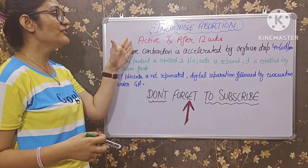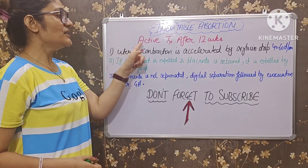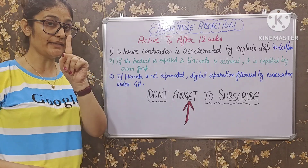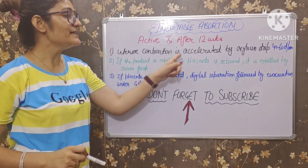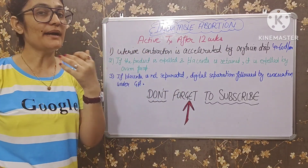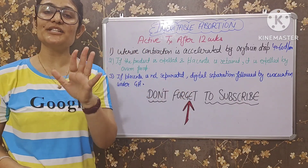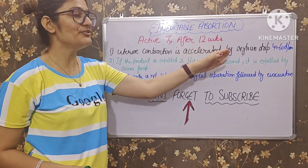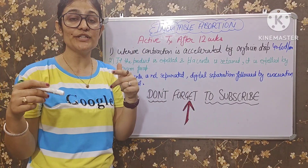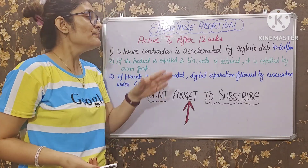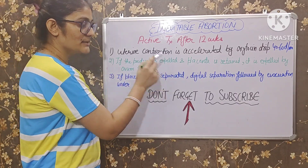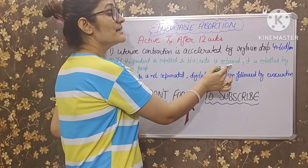Agar pregnancy 12 weeks se baad ki hai, gestation 12 weeks se zyada ki hai, to active treatment after 12 weeks of gestation mein: number one, uterine contractions is accelerated by oxytocin drip. Oxytocin ka drip start kar diya jayega 40 to 60 drops per minute ke rate se, taaki uterus mein jo contractions aa rahe hain woh accelerate ho jayein.